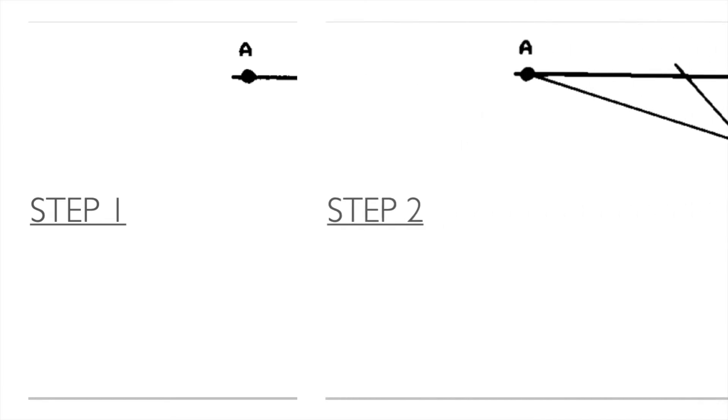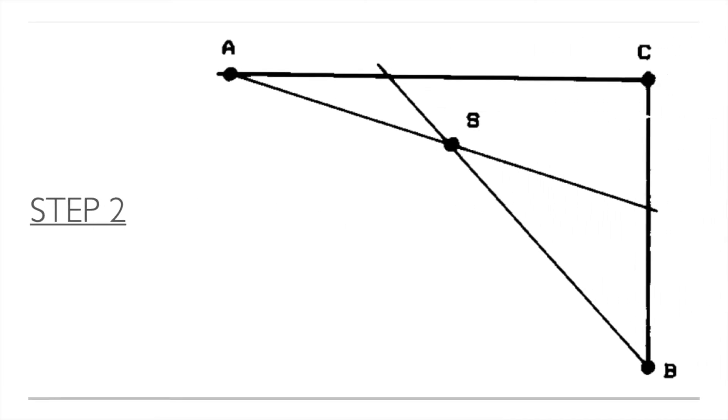Step two. A line is drawn from point A passing through S and another line is drawn from B passing through S.